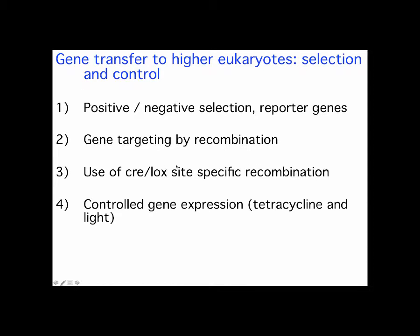You can make your own genes, and particularly the important process here is taking a particular gene and making a very specific mutation in it. One of the things people got really good at early on is doing gene knockouts — just getting rid of a gene, which is great and wonderful.